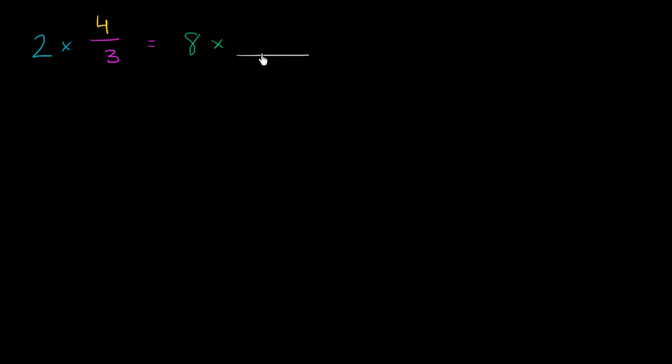So I'm assuming you've given your try. Now let's think through this. So 2 times 4 thirds, we can literally view that as the same thing as, if we rewrite the 4 thirds, this is the same thing as 2 times... Instead of writing 4 thirds like this, I'm literally going to write it as 4 thirds. And I know it sounds like I just said the same thing over again, but I'm literally going to write 1 third four times.